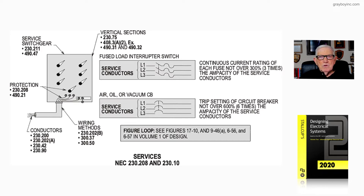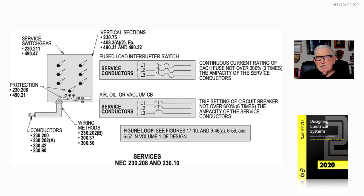For your air, oil, or vacuum-type circuit breaker, with L1 and L2 hitting the breaker, trip settings shall not exceed 600% the ampacity of the service conductors. For more information in the NEC loop, we suggest you see figures 17-10, 9-48, 6-56, and 6-57 in volume 1 of design — and figure 17-10 would be in volume 2 of design.